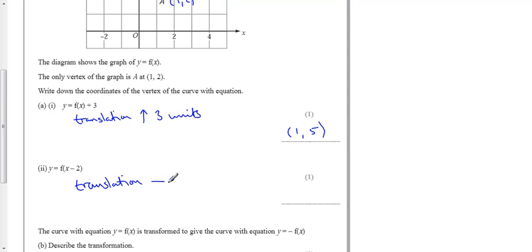So that's actually to the right two units. When it's inside the bracket, that means it's horizontal, and it does the opposite of what you expect. Plus 3 means go up 3, it's kind of obvious. But minus 2 actually means 2 units to the right.